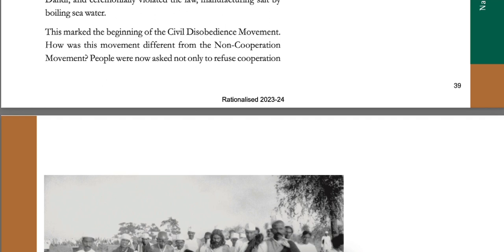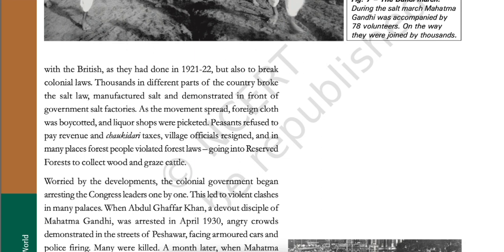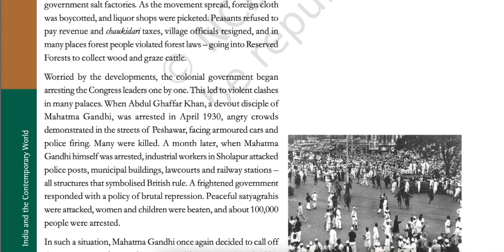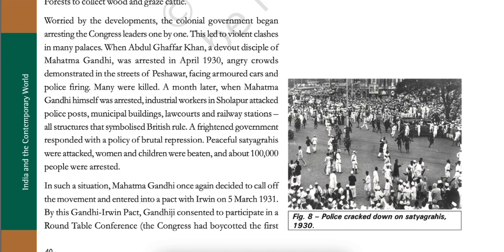How was this movement different from the non-cooperation movement? People were now asked not only to refuse cooperation with the British as they had done in 1921-22, but also to break colonial laws. Thousands in different parts of the country broke the salt law, manufactured salt and demonstrated in front of government salt factories. As the movement spread, foreign cloth was boycotted and liquor shops were picketed. Peasants refused to pay revenue and chaukidari taxes. Village officials resigned and in many places, forest people violated forest laws, going into reserved forests to collect wood and graze cattle. Worried by the developments, the colonial government began arresting Congress leaders one by one, leading to violent clashes in many places.